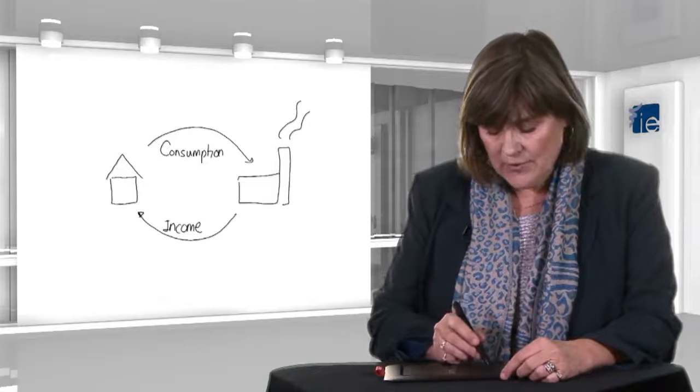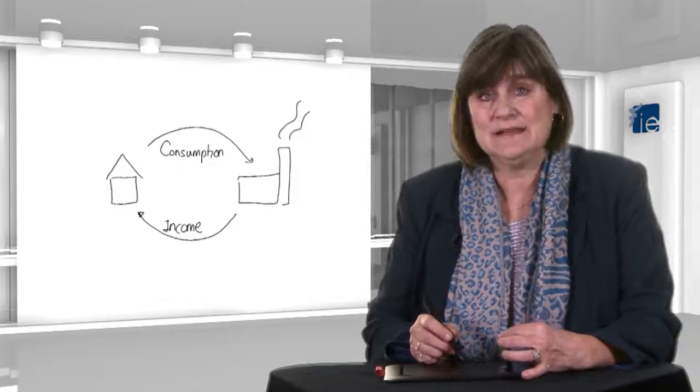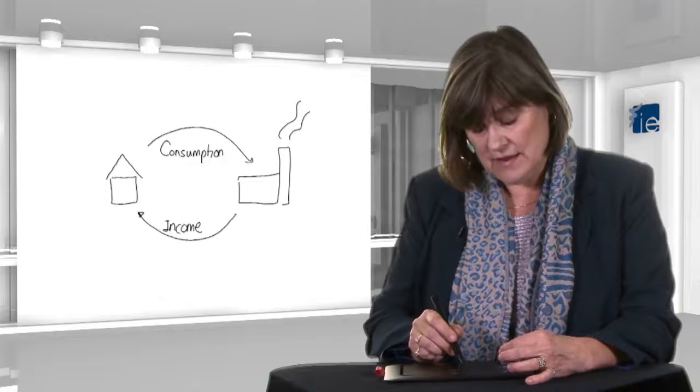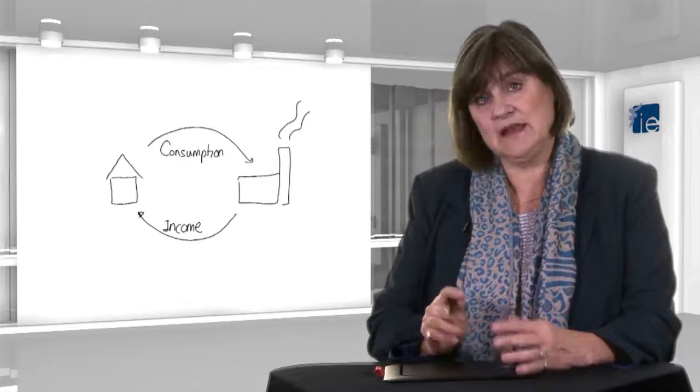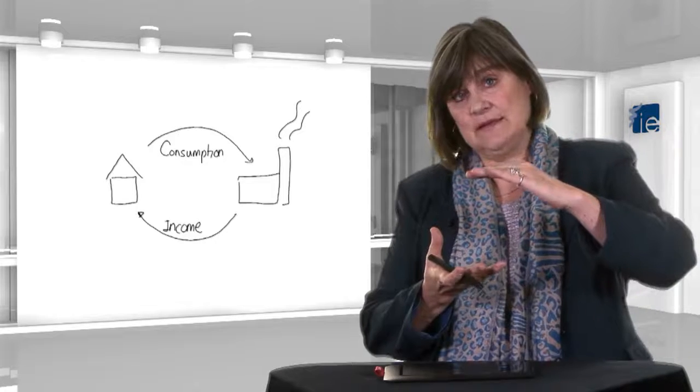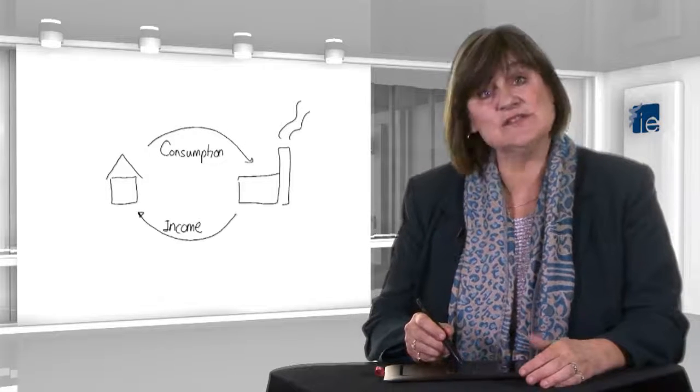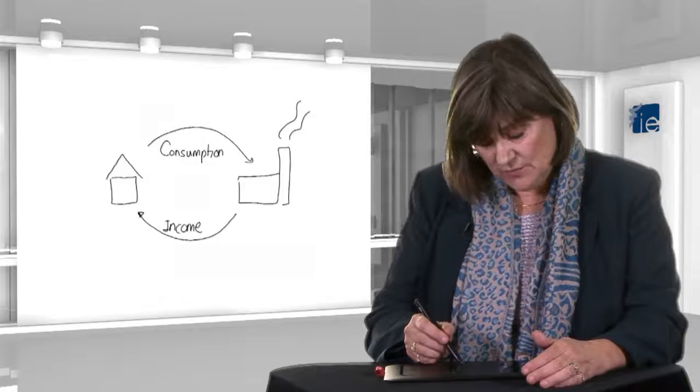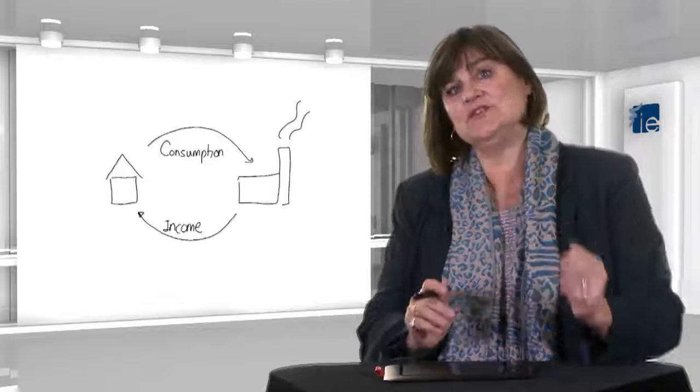But if people receive 100 and suddenly start to consume only 90, what's going to happen is that the next round, businesses will have only 90 to generate in income. So the whole economy will shrink. In other words, the idea is that the top arrows are spending and whatever is spent will determine those bottom arrows, which are income. And the two will tend towards equality.